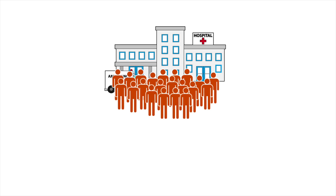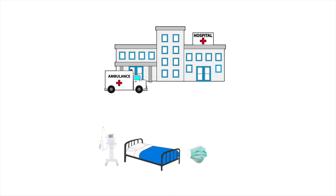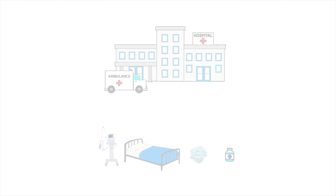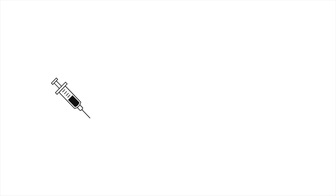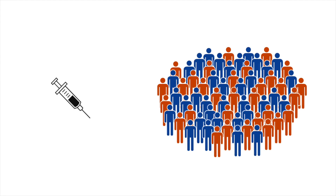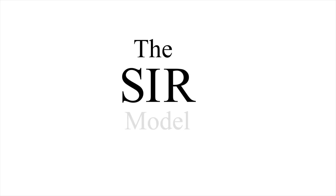The goal in the mitigation phase is to slow the spread of the virus enough that the healthcare system is not overwhelmed — so there are enough hospital beds, protective gear, ventilators, and medications for those who need them. Also to buy time to put procedures in place to care for the most vulnerable. Slowing the spread can also buy time until a vaccine is invented, and as we'll see shortly, it can also reduce the total number of people who ever get infected.